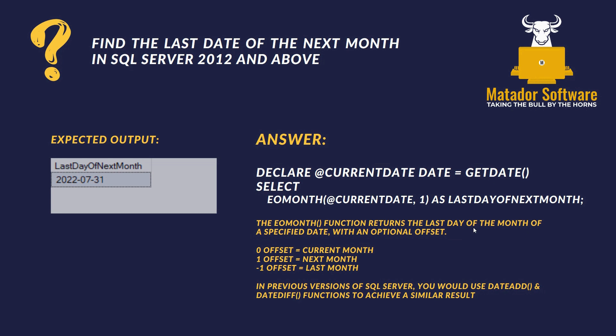We use the number 1 as the offset for next month's date, then alias it as last_date_of_next_month. The EOMONTH function returns the last date of the month of a specified date and has an optional offset — 0 would be the current month, 1 would be the next month, and -1 offset would be last month. You can repeat this: 2 would be two months time, and so on. In previous versions of SQL Server below 2012, you would have to use DATEADD and DATEDIFF functions, so this is quite a good time saver.